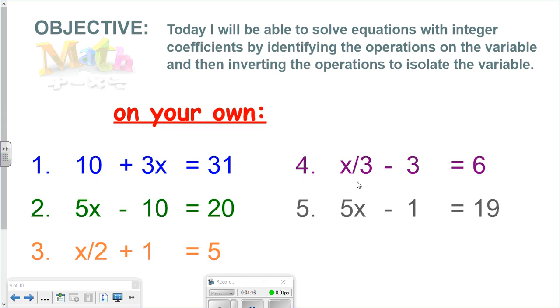The fourth one is one third of x, or x divided by 3, minus 3 equals 6. And the fifth one, 5x, 5 times x, 5x minus 1 equals 19. Go ahead and work those on your own. I'll be checking your work at the beginning of class.